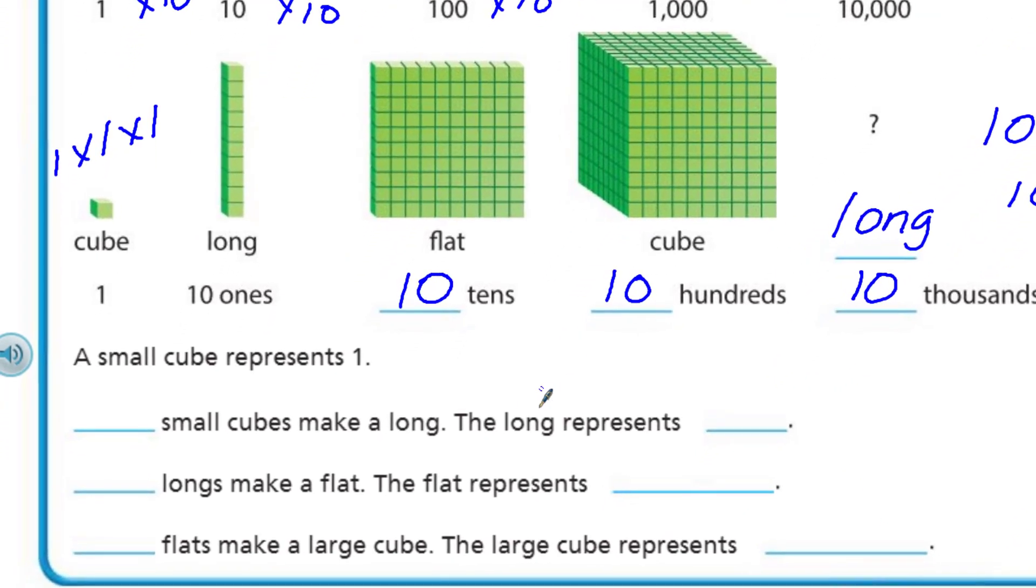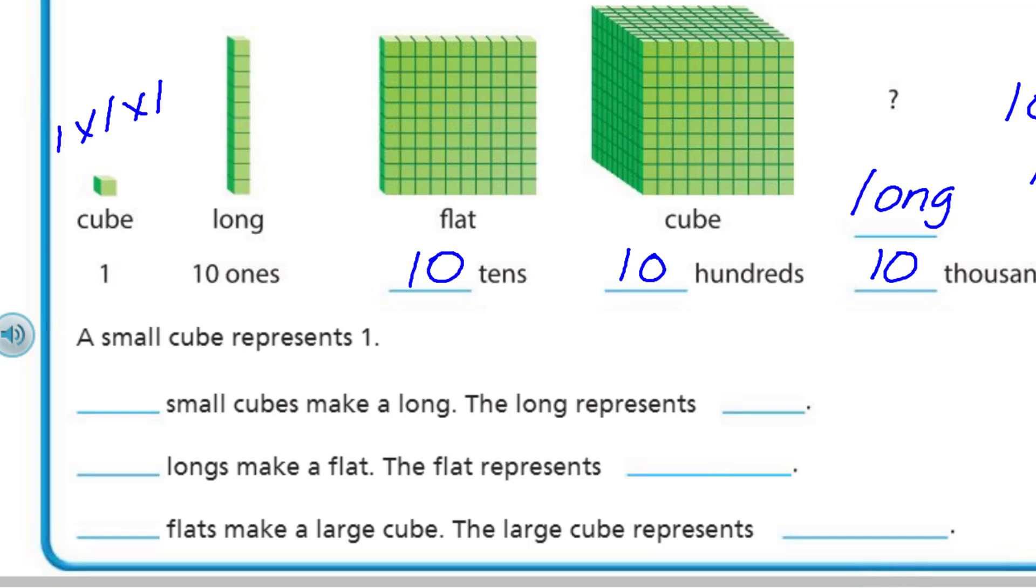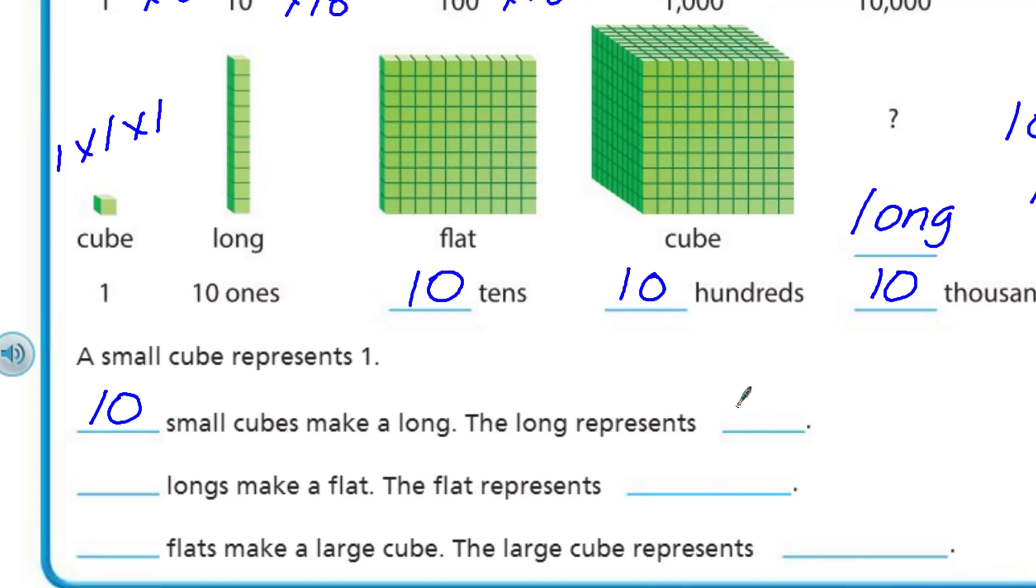A small cube represents one. Ten small cubes make a long, so the long represents ten. Ten longs make a flat, so the flat represents one hundred. Ten flats makes a large cube. The large cube represents one thousand.